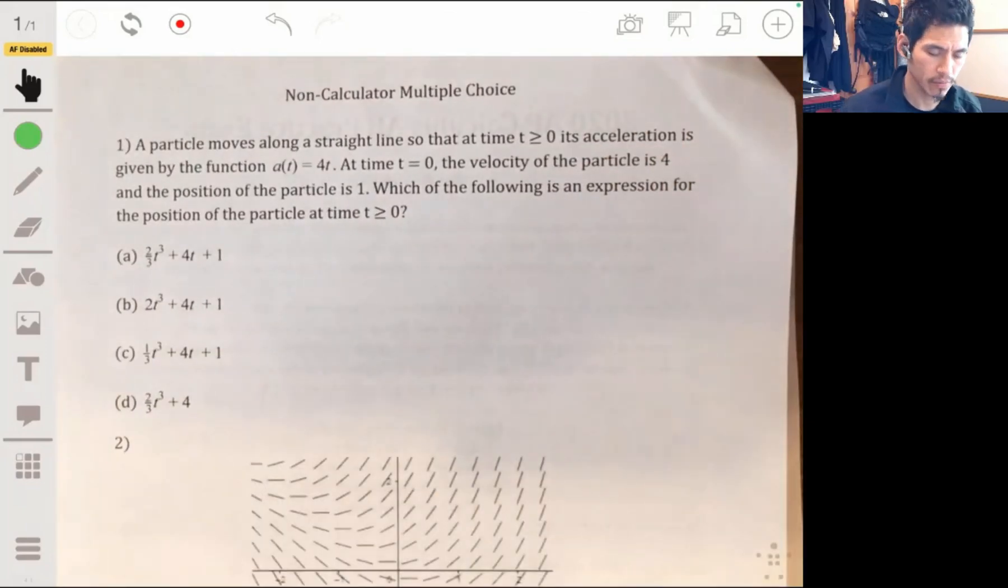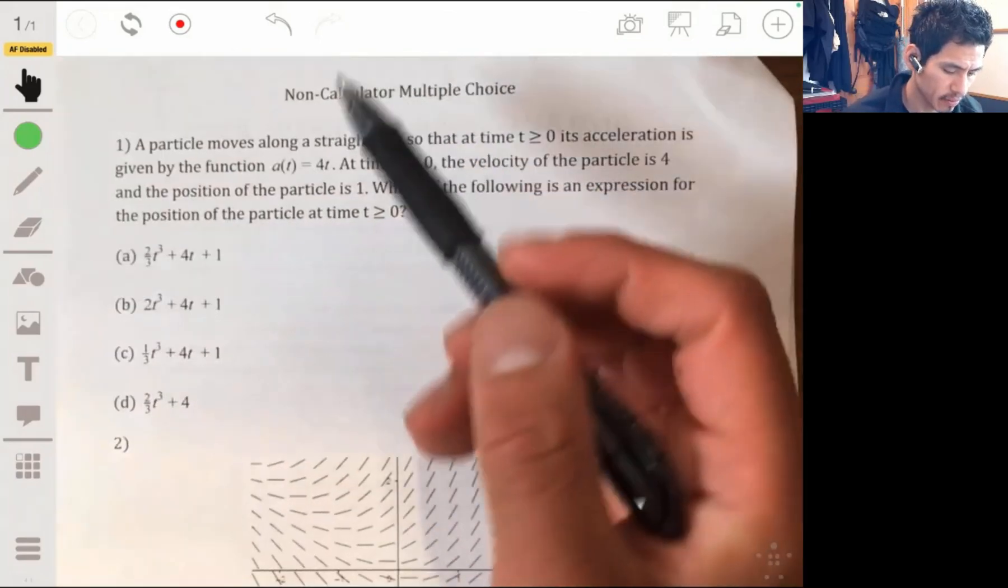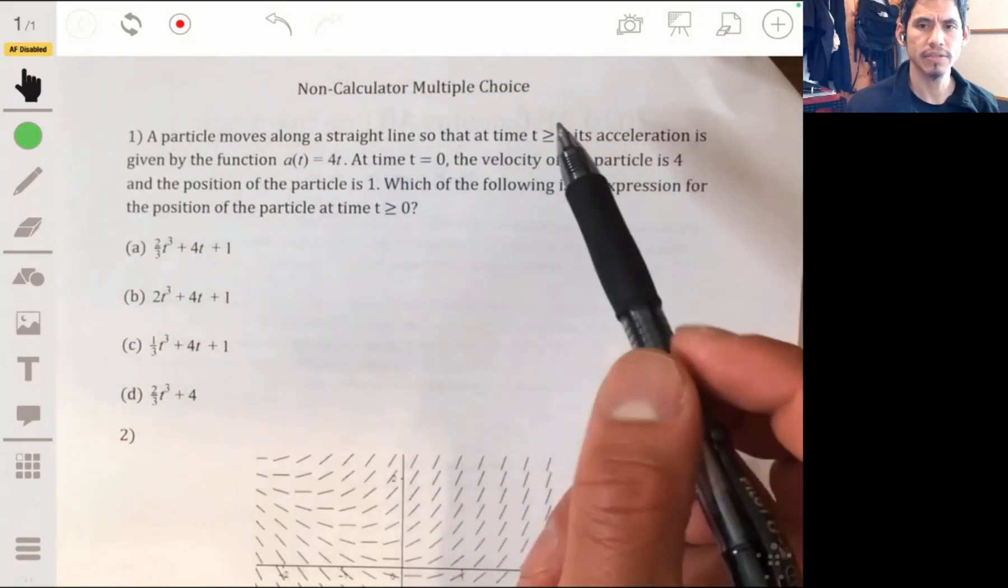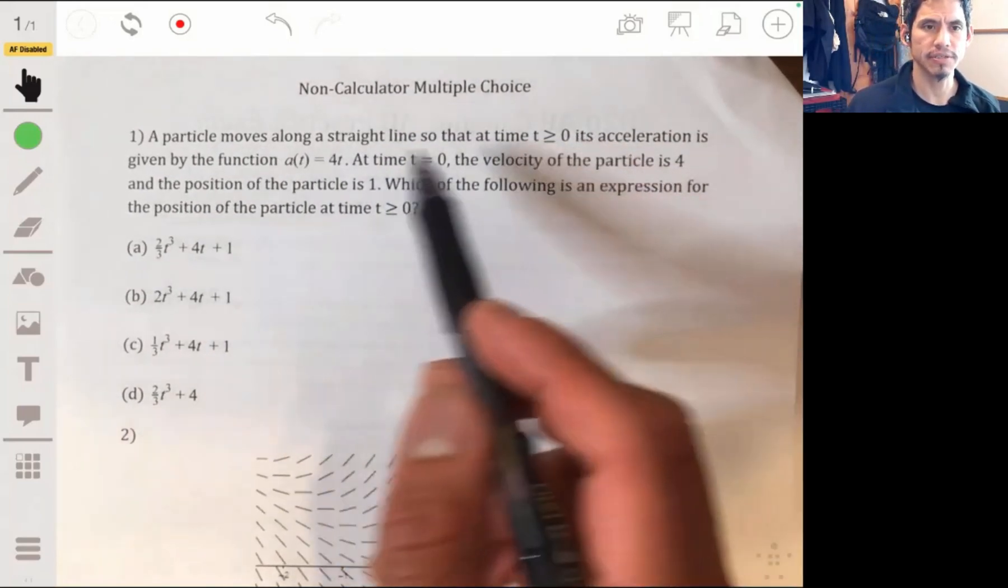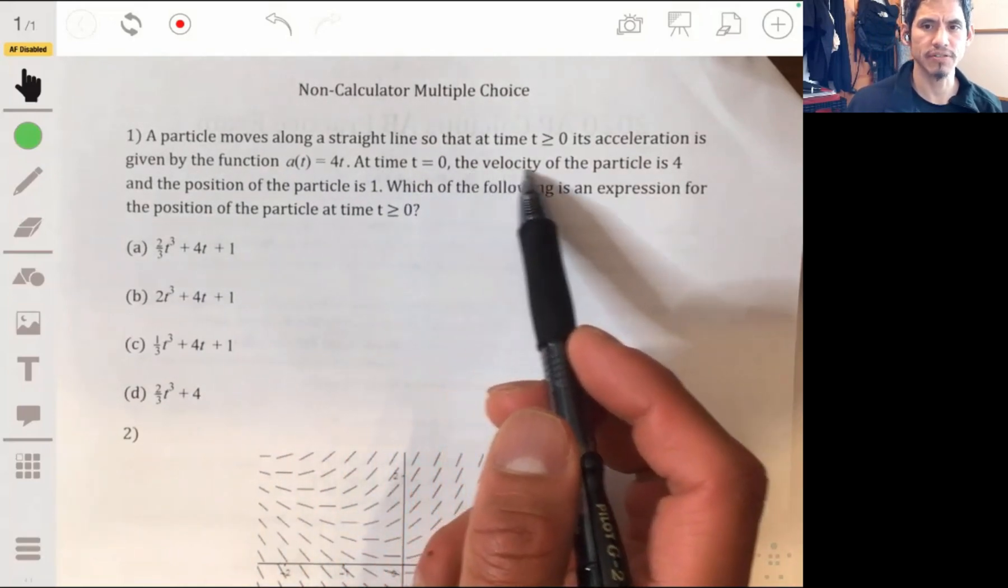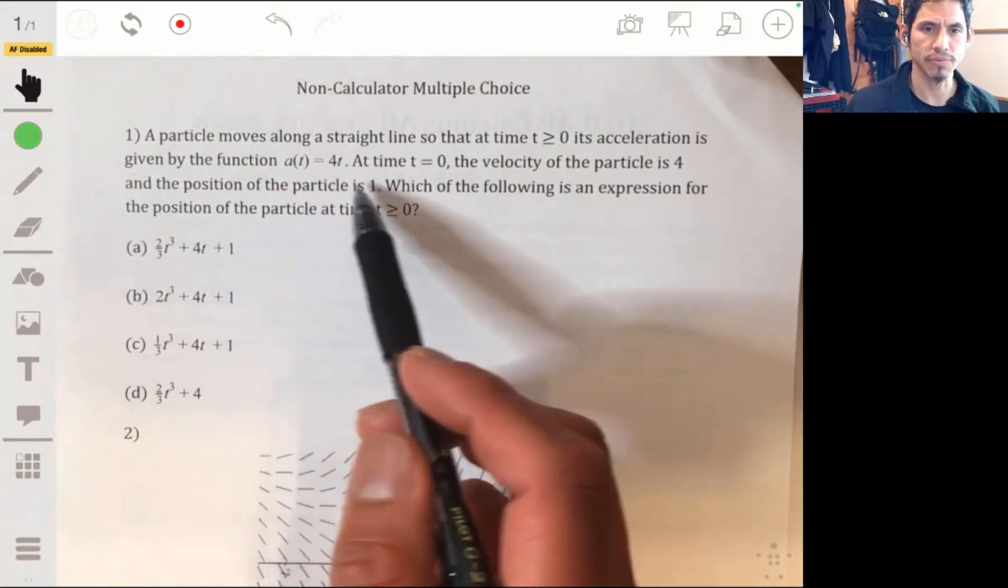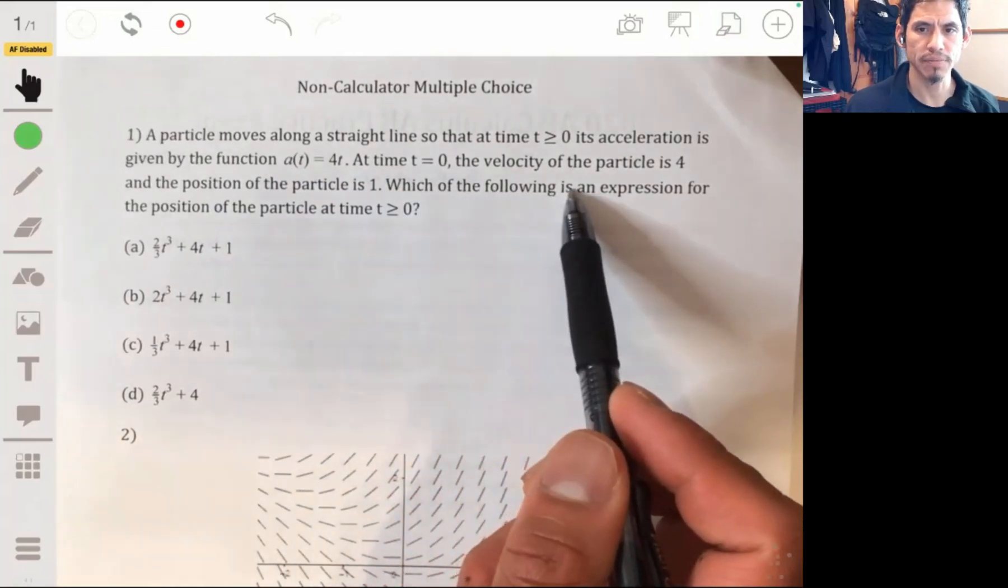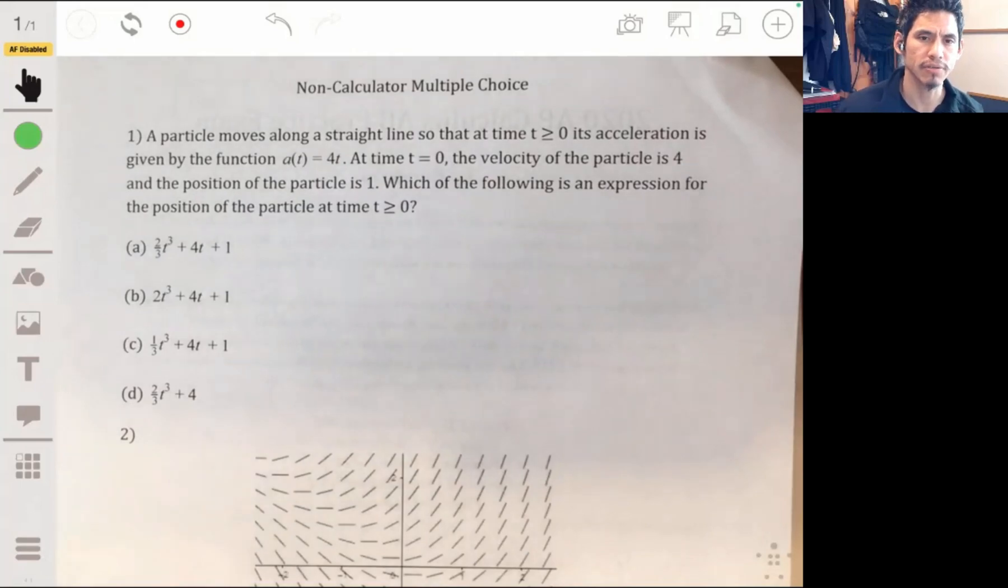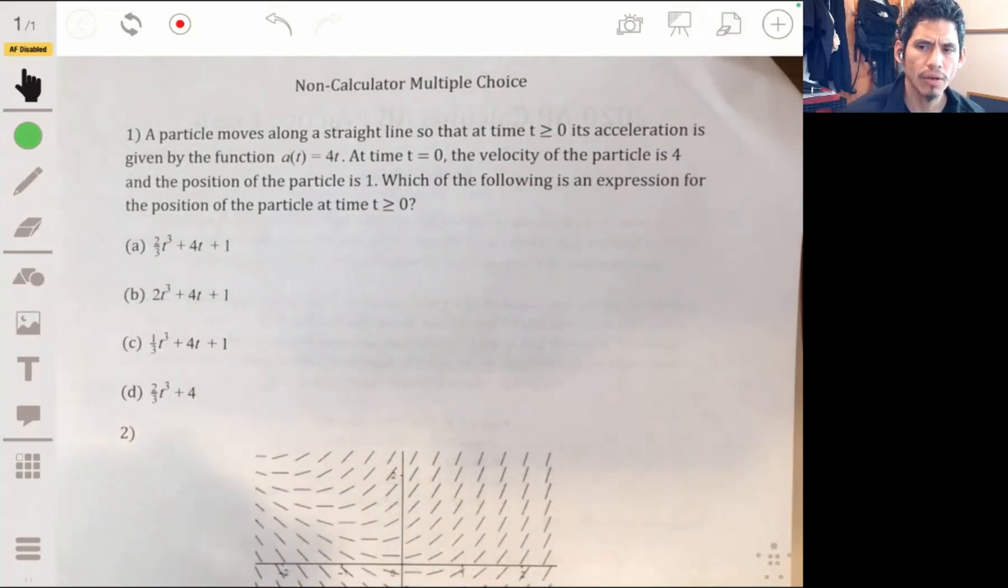Alright, problem one. We have a particle that moves along a straight line so that at time t is greater than or equal to zero, its acceleration is given by the function a(t) equals 4t. At time t equals zero, the velocity of the particle is four and the position of the particle is one. Which of the following is an expression for the position of the particle at time t is greater than or equal to zero?